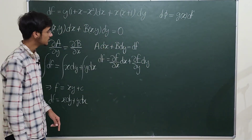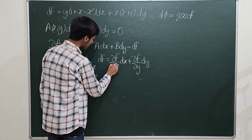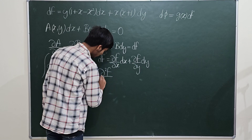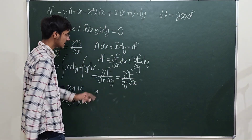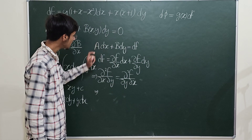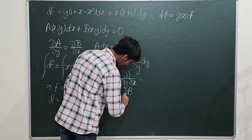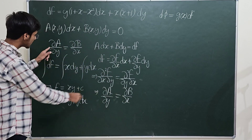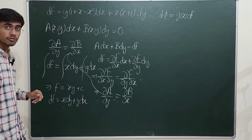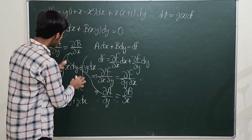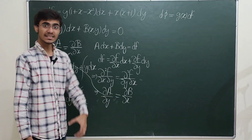Since d²f/dx dy equals d²f/dy dx, the condition for exactness is that the partial derivative of A with respect to y must equal the partial derivative of B with respect to x. This cross-partial derivative property is how the exactness condition arises from the concept of differentials itself.